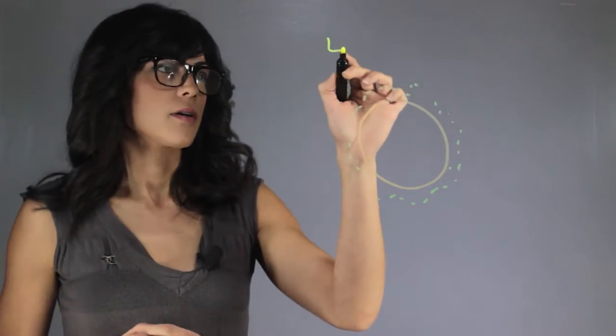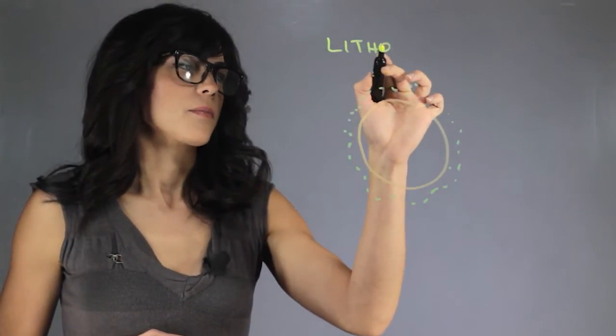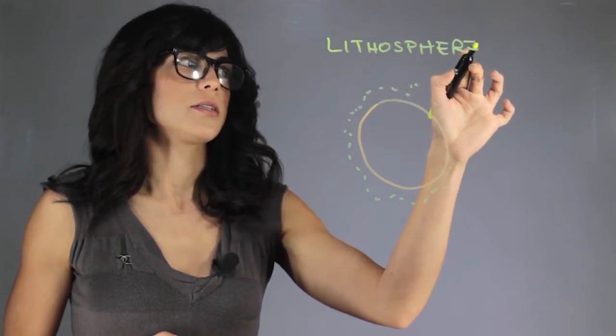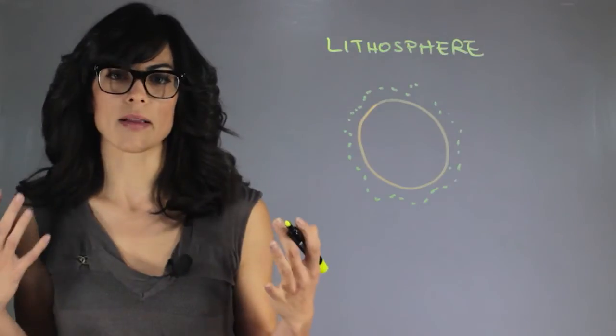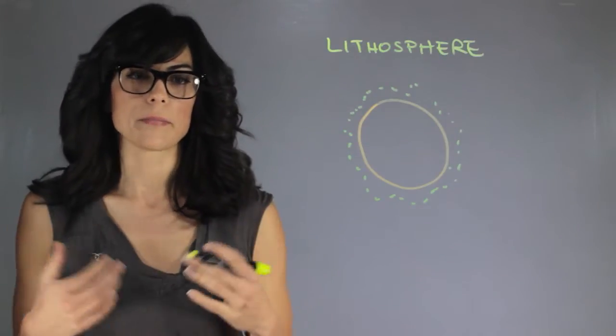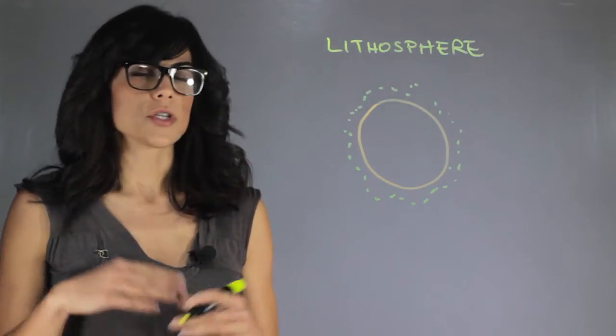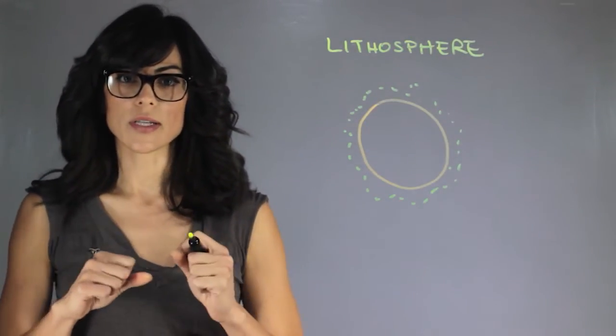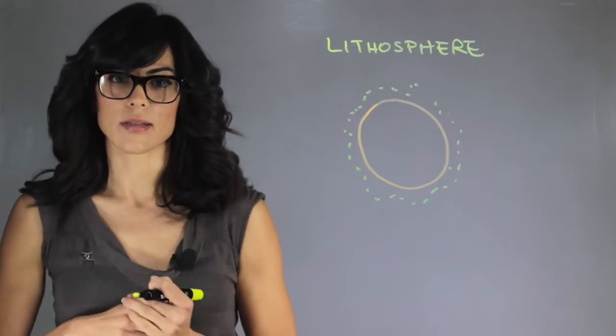So a lithosphere is the outermost layer of an object, and it generally defines the minerality of the planet. Now, we generally study the response of tectonic movement and we can tell how rigid and how thick the lithosphere is.